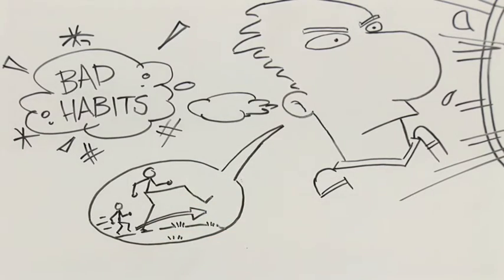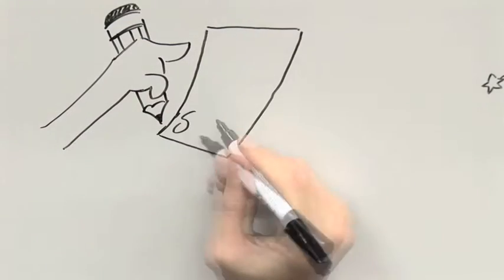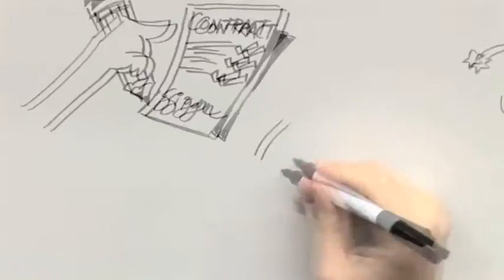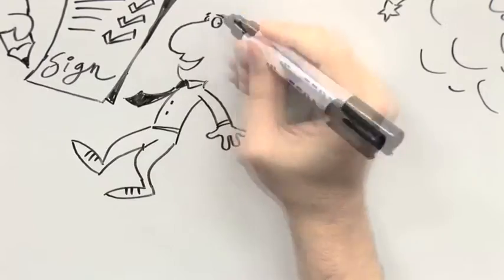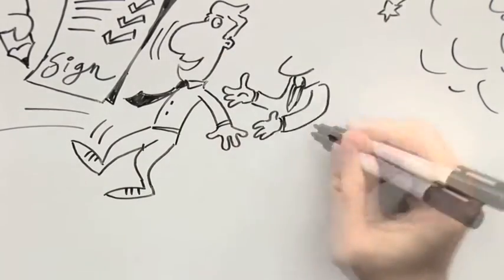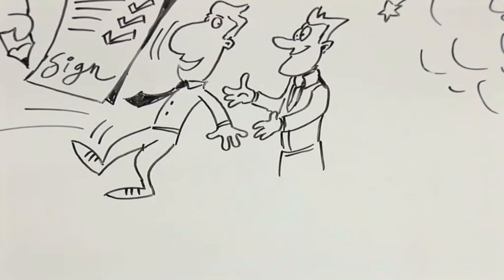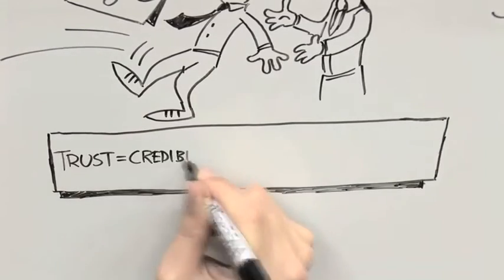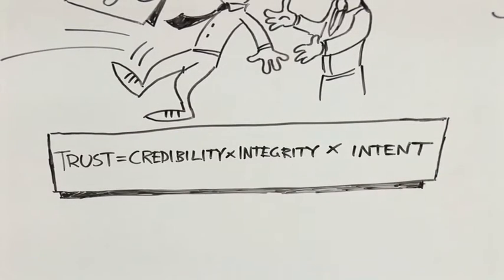Now, whilst this very direct coaching was well received by the leaders, it was delivered within a very specific context. Firstly, I had established permission for direct coaching well in advance of giving it. Secondly, my relationships with these leaders was built on very high levels of trust. That is, in their eyes, I had perceived credibility, demonstrated integrity, and assumed good intent.